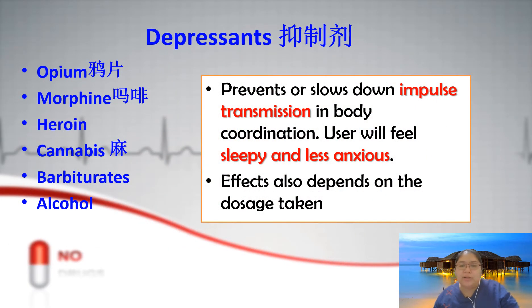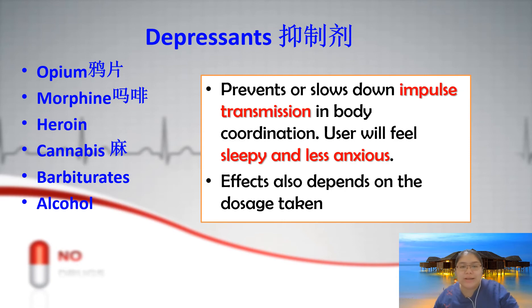Looking at depressants in more detail: they prevent or slow down the impulse transmission and body coordination. You feel sleepy and less anxious. The effect depends on the dosage — the more you take, the more effective it is on your body. Examples of depressants include opium, morphine, heroin, cannabis, barbiturates, and alcohol.